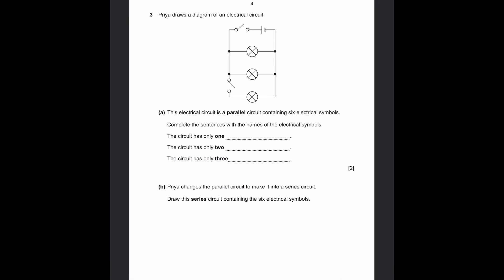Question 3. Priya draws a diagram of an electrical circuit. Part A: This circuit is a parallel circuit containing 6 electrical symbols. Complete this sentence with the names of electrical symbols. The circuit has only one... So we have 6 electrical symbols here, which I've all circled in red now. Out of these, there's only one cell. By the way, battery is the wrong answer. Battery is more than one cell in series. So you have to write cell.